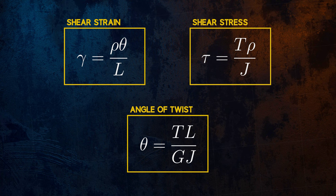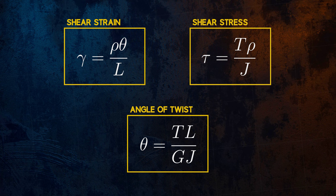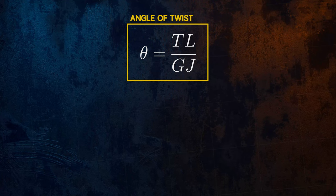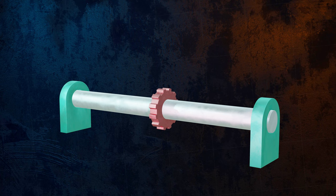So far we have only talked about a uniform bar fixed at one end with a single applied torque, but shafts are often loaded by multiple torques. This shaft for example, which is supported by bearings at both ends, is driven by a gear at point B, and in turn drives two gears at points A and C.